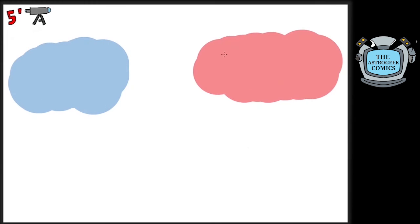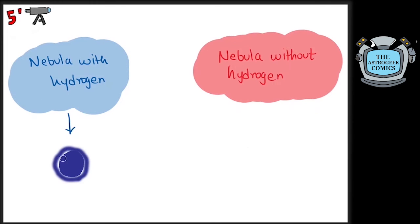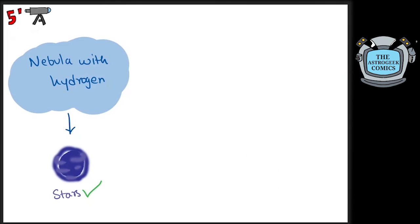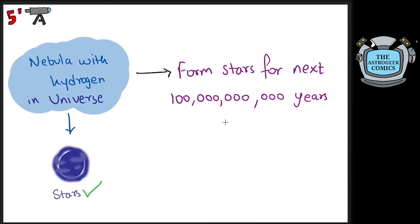Formation of stars can only happen in hydrogen-rich nebulae as hydrogen is the easiest element to fuse and leads to the fusion of higher elements. As of current estimates, the hydrogen in the universe will support the star formation up to 100 trillion years from now. Wow!